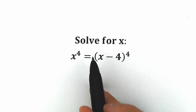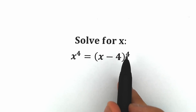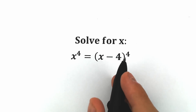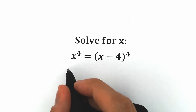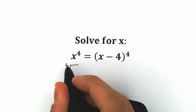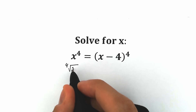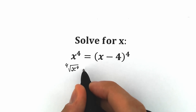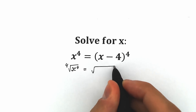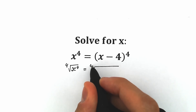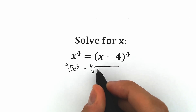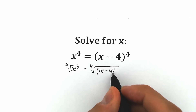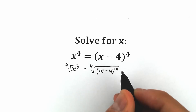A lot of students might say this is a very easy challenge — we have x to the fourth and we have a fourth power right here, so if we apply the fourth root on the left side, we can easily apply the fourth root on the right side. So we get x equals x minus 4 to the power 4.